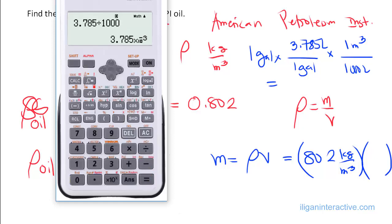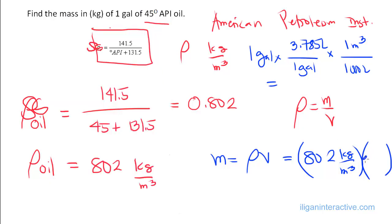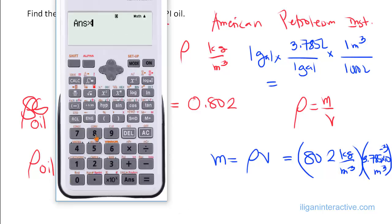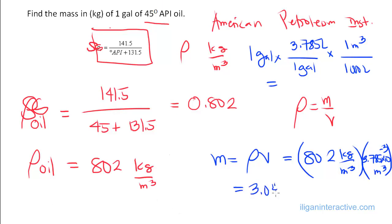3.785 times 10 to the negative 3 m³, and you multiply that by 802. You get 3.04 kilograms. So the mass of 1 gallon of a 45-degree API oil is 3.04 kilograms.